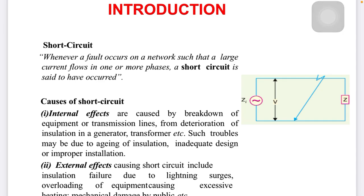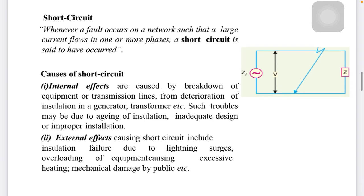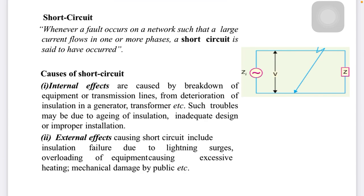There are two main causes of short circuit current: internal effects and external effects. In the case of internal effects, it is caused by the breakdown of equipment. In a transmission line, there are many breakdowns that occur due to some variations — it may be due to external fault or internal fault.